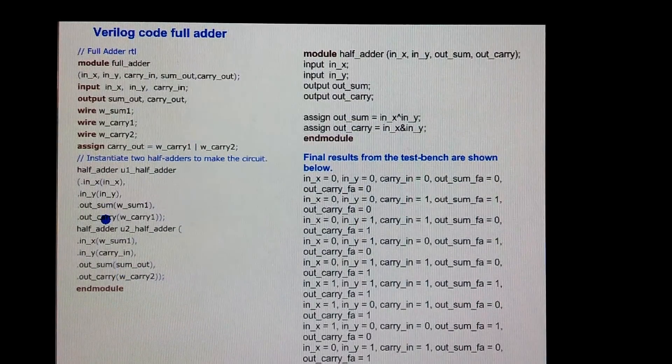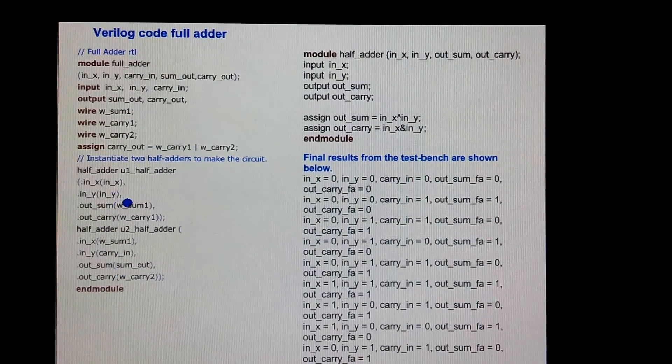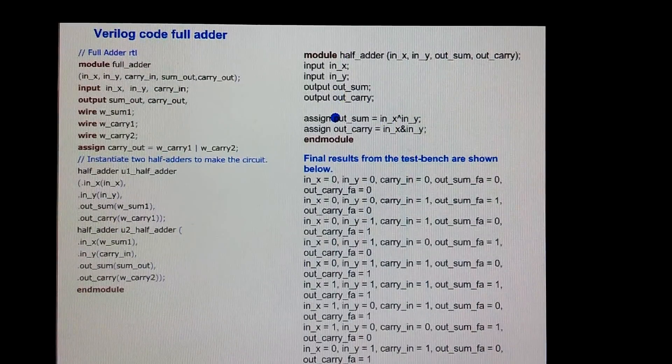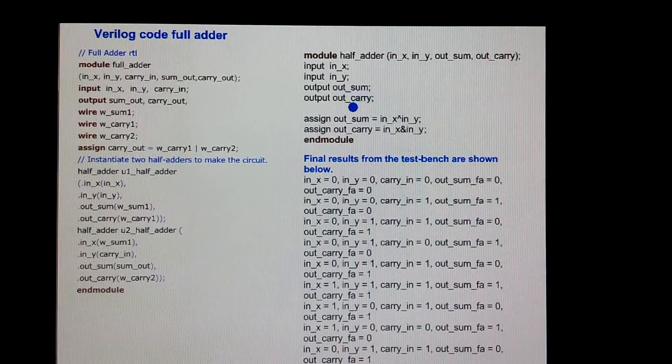The half adder is an instantiation of another module. The module for the half adder is here where we have two inputs, out sum, and out carry.